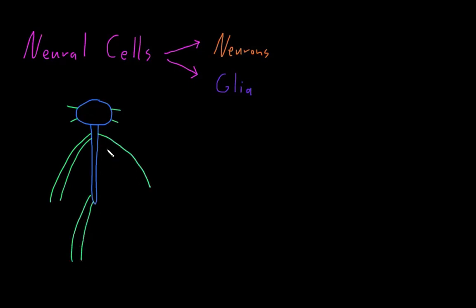We'll cover a lot more detail about neuroanatomy in other videos, but I just need to bring up the central and peripheral nervous system because the neural cells are divided up differently amongst the different systems.